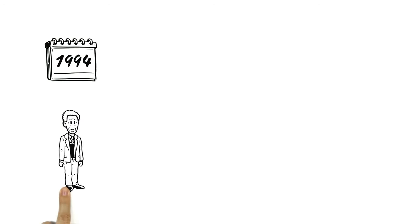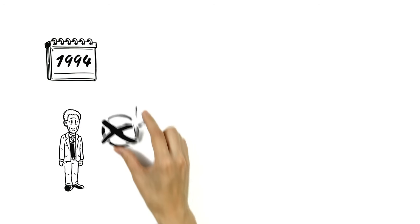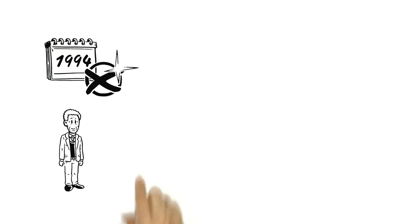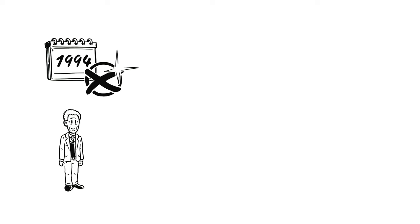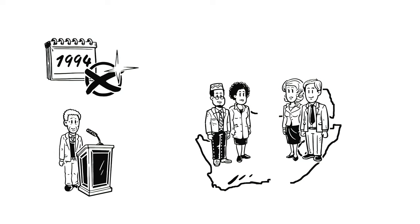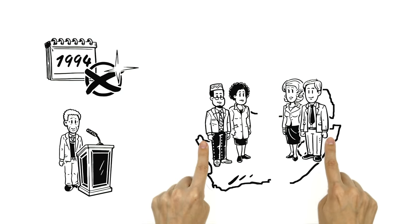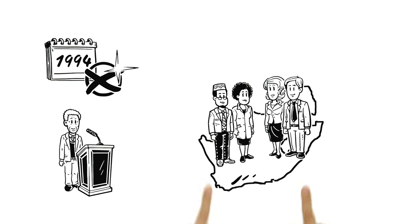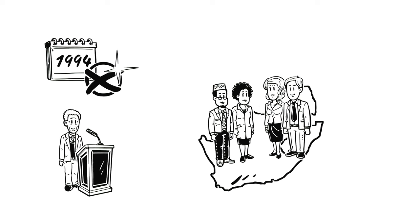Four years later, Nelson Mandela ran for office in the country's first democratic election and was voted in as South Africa's very first black president. Considering himself the president of all South Africans, he united the country that had been divided along racial lines.